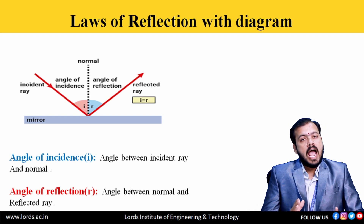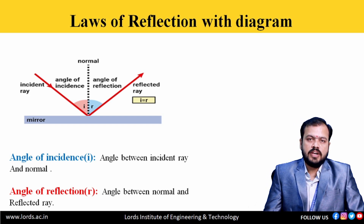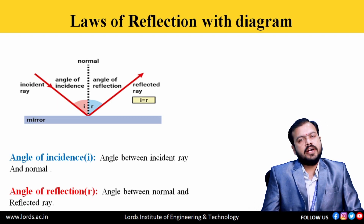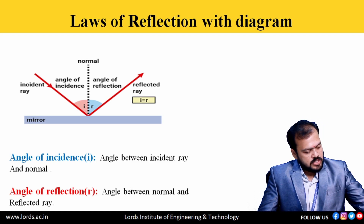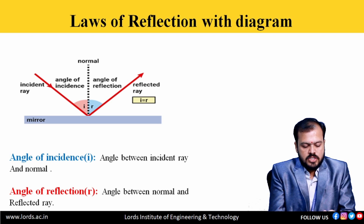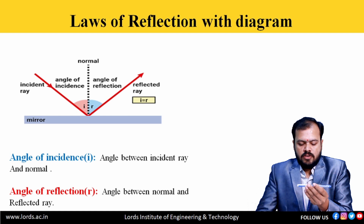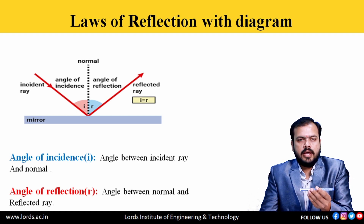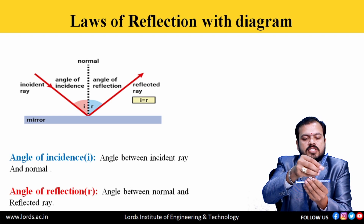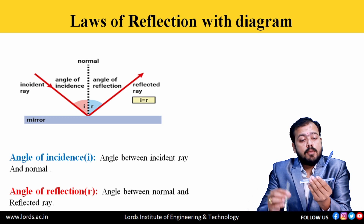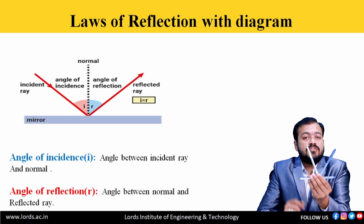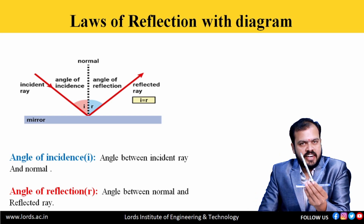Here, there are two laws. First law: the angle of incidence is always equal to the angle of reflection. Second law: incident ray, reflected ray, and normal at the point of incidence all lie in the same plane. For example, if I equals 30°, then R is also 30°. If R equals 60°, then I is also 60° — because of the first law of reflection, angle of incidence is always equal to angle of reflection.